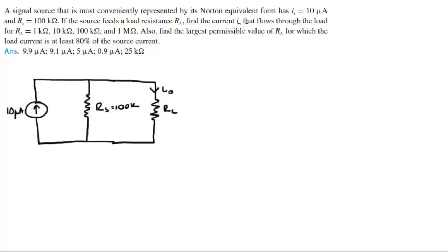Find IO with all these different values of RL, and then find the largest value of RL so that the current is at least 80 percent of the source current. I'm going to build a little table.